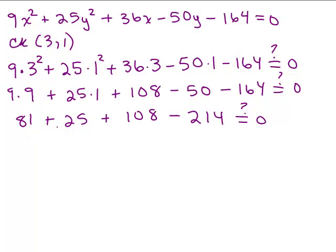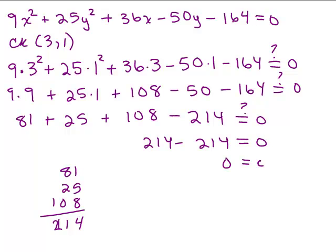And what do we have here, let's add those three numbers, we have 81, 25 and 108, so that's 214, carry the 1, so that's going to be 214, so I get 214 minus 214, yeah, that's true for sure. So (3, 1) is definitely on the graph and you could check the rest of them as well.